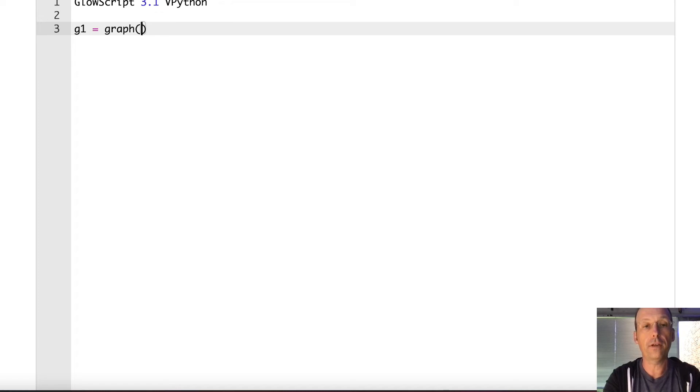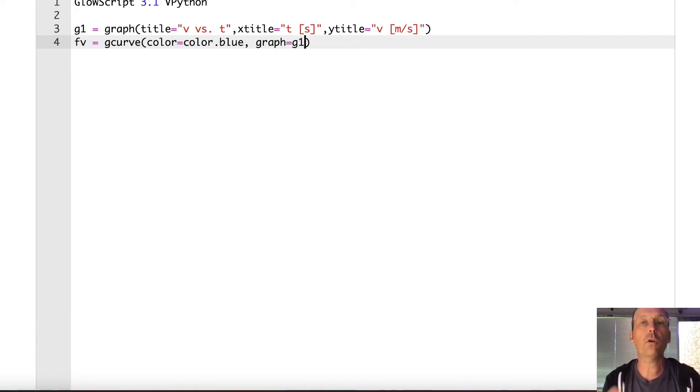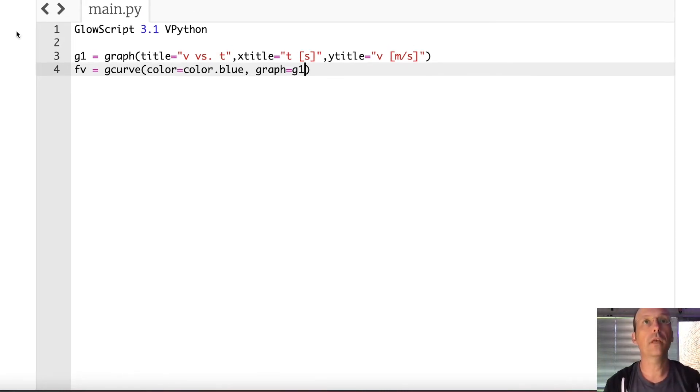But there'll be two graphs next to each other. So g1 is a graph. Title equals, let's give this a title of v versus t. And then x title is going to be time in seconds. Y title is velocity in meters per second. And then I'm going to say fv equals g curve, color equals color dot blue, graph equals g1. So in GlowScript VPython, if I make more than one graph, I have to give those graph axes labels. I have to give it a name, and then when I make the function to plot fv as a function, that's actually the curve, I have to tell it which graph I want it to go in.